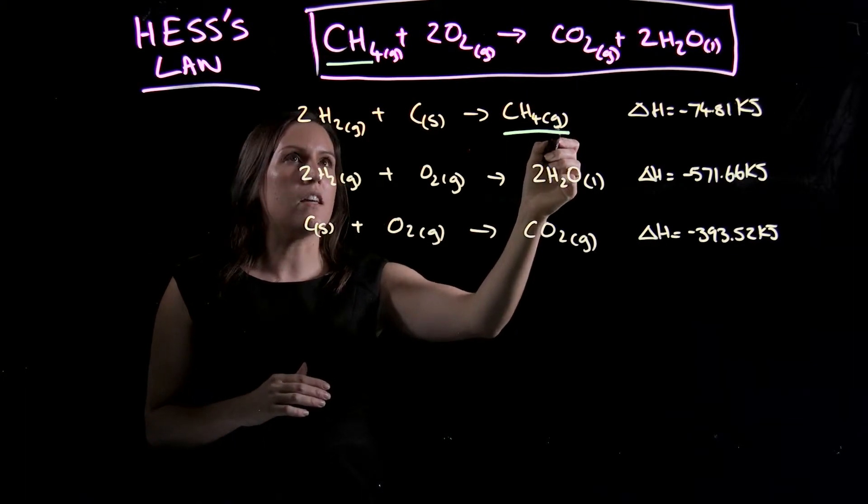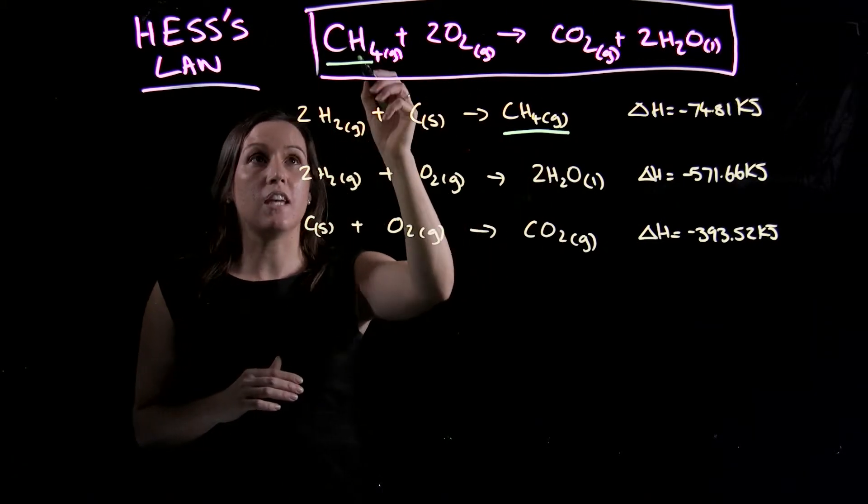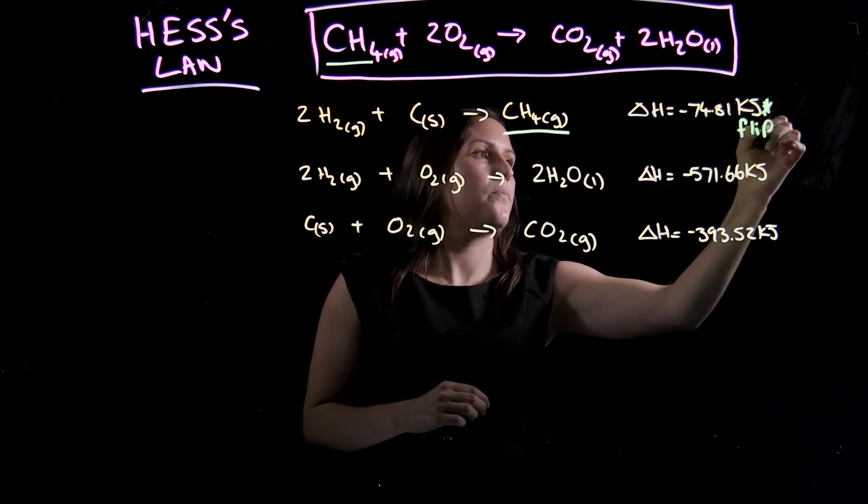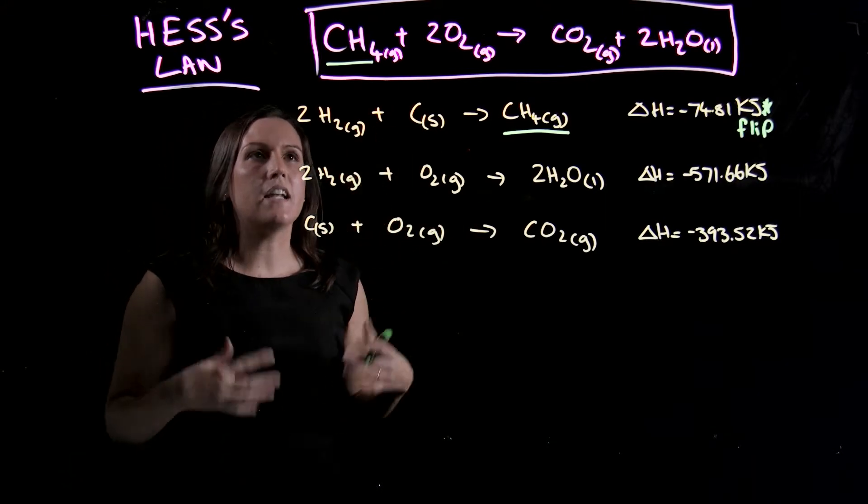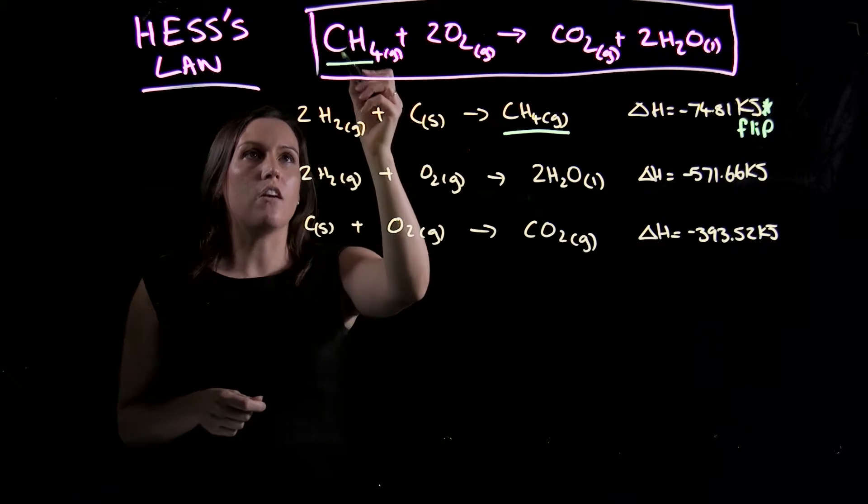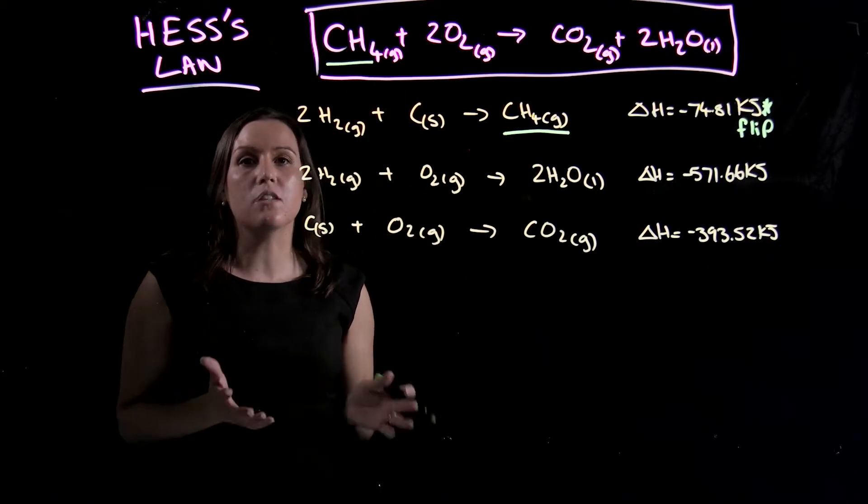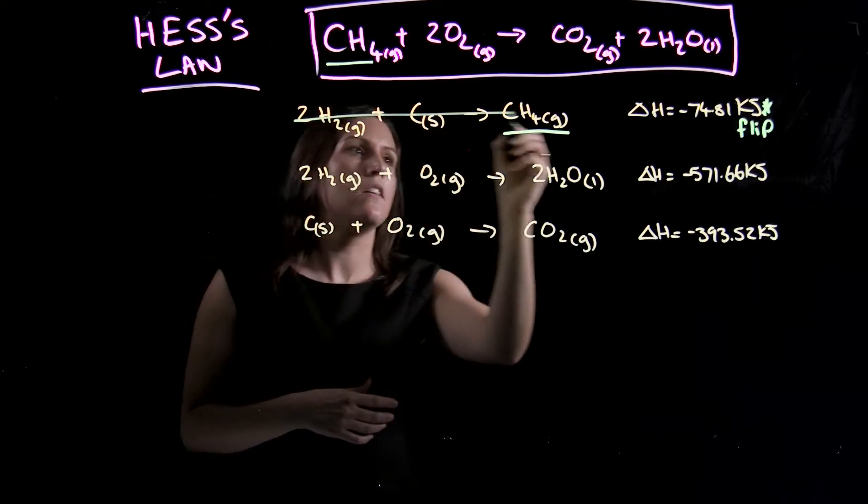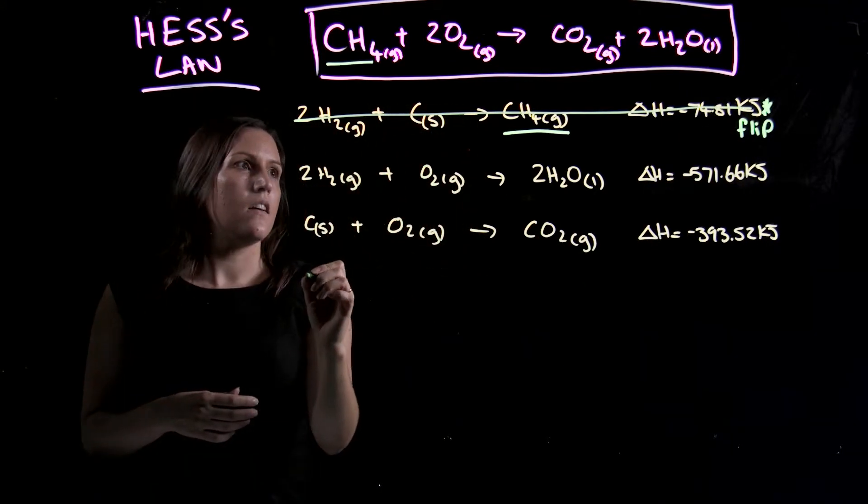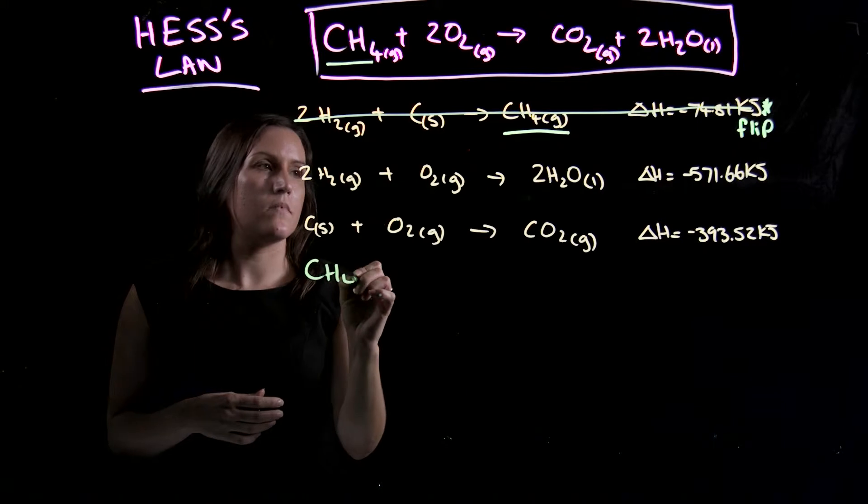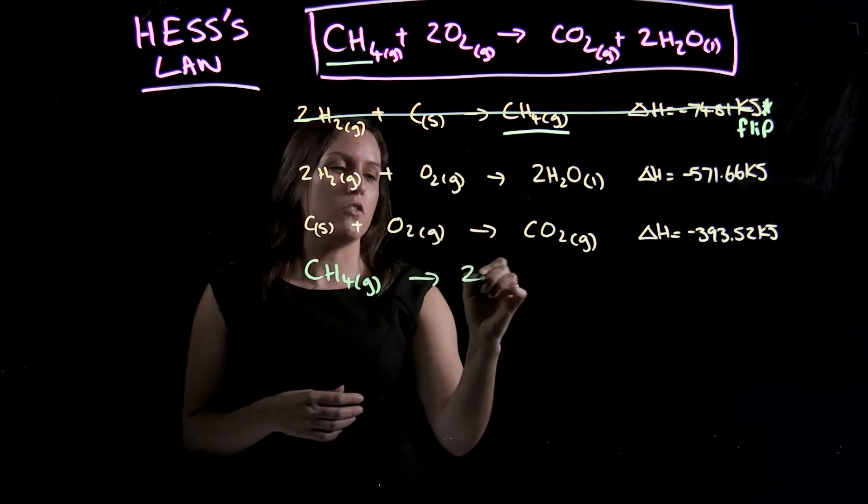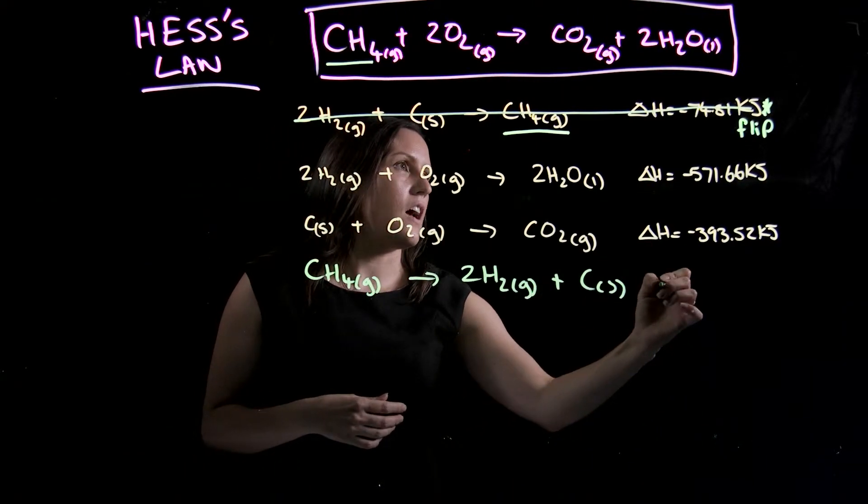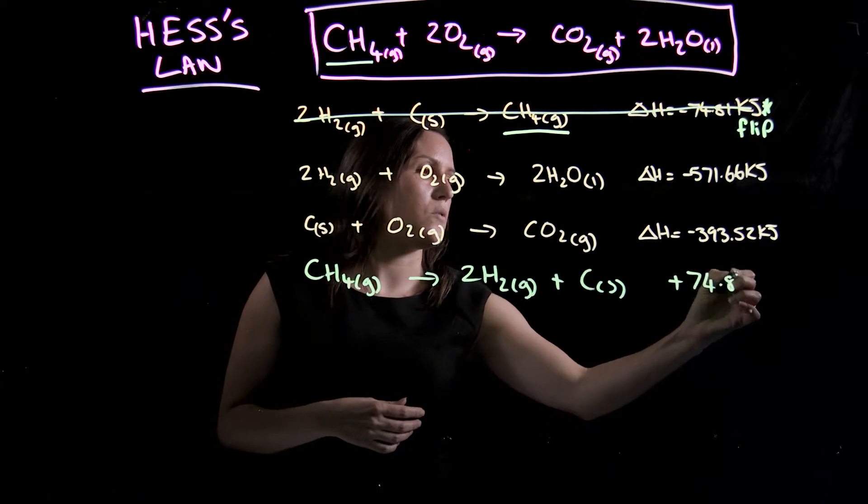So if CH4 is a product here, I need to flip this reaction so CH4 becomes a reactant. So here I'll flip. Now it needs to be on the same side, and it needs to be the right magnitude. So here I've got one CH4, and here I have one CH4. So I don't need to multiply or divide by anything. I can just flip that one. So I'll go ahead and do that. So I'll put a line through it, and I'll write it out again. So I've got CH4 gas going to 2H2 gas plus C solid, and then that sign will become a positive 74.81 kilojoules.